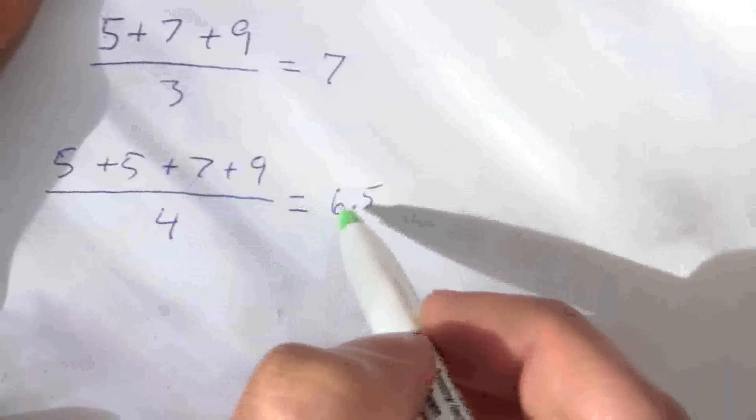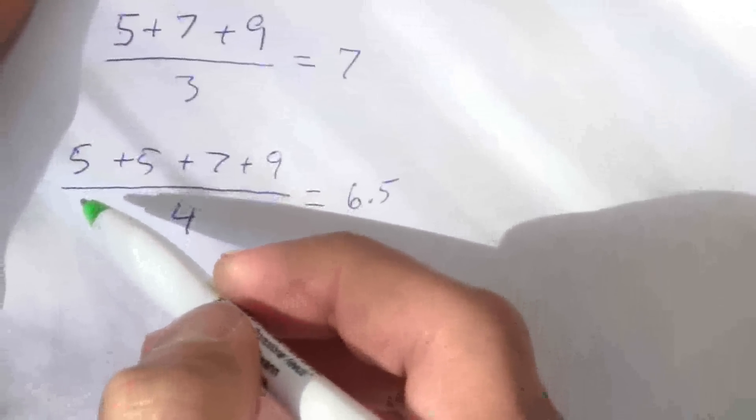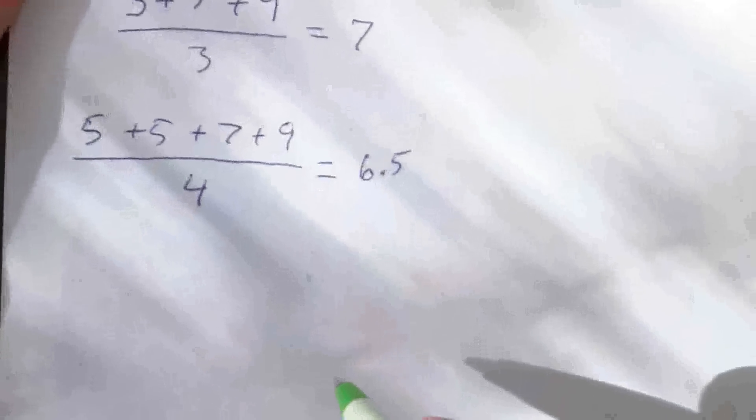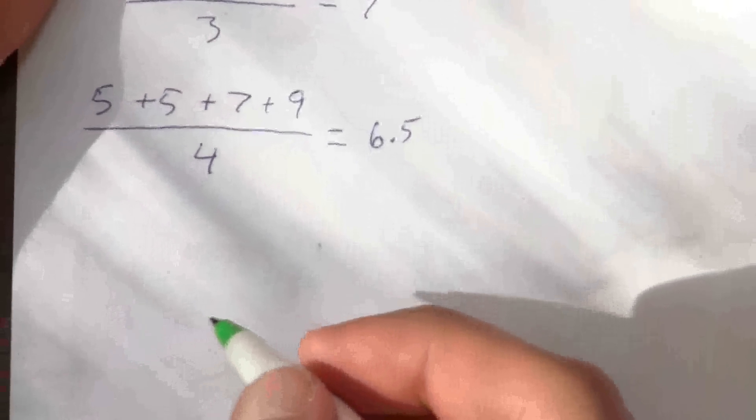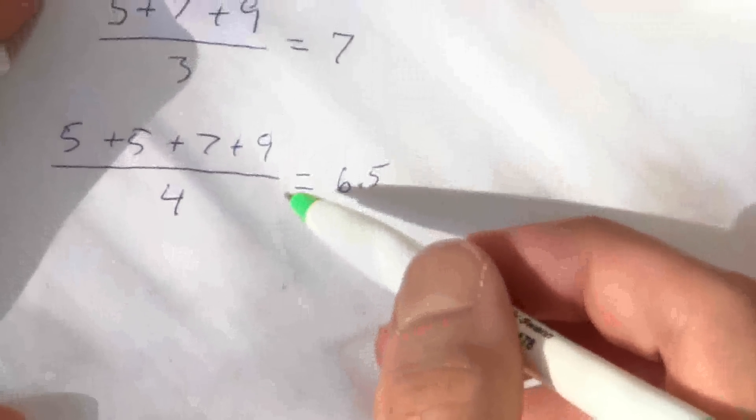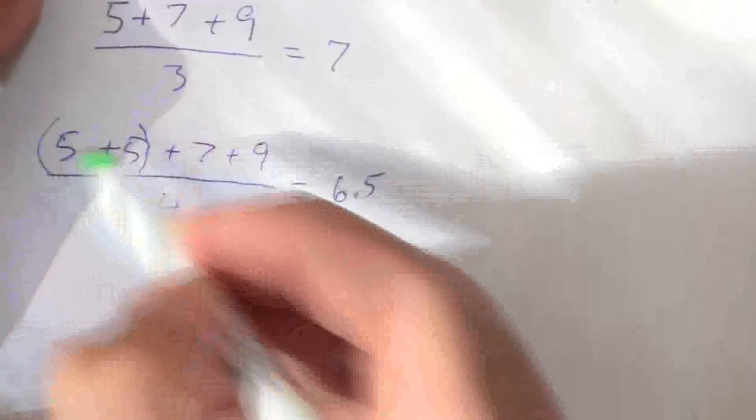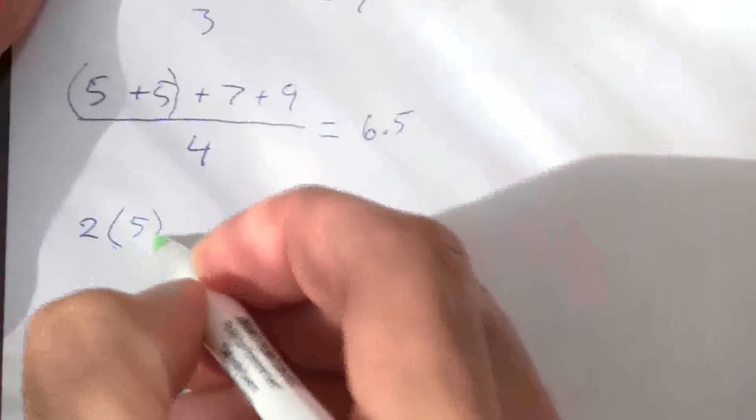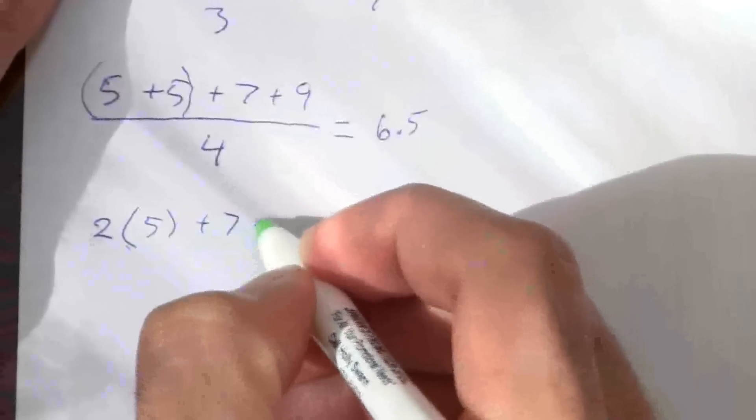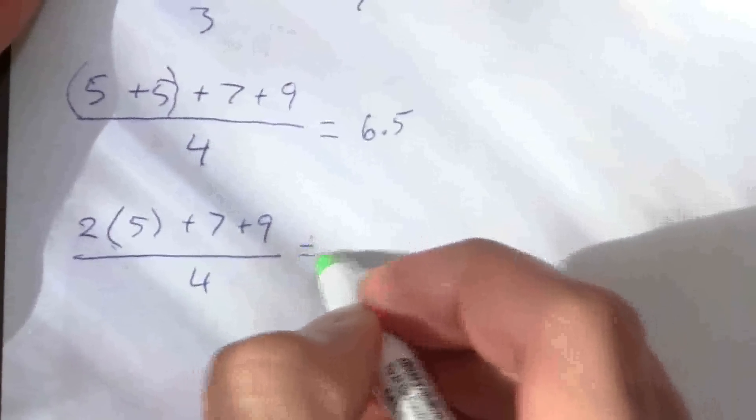So I've weighted it, I've weighted the average a little bit more toward the 5 end. Essentially when I'm adding those two fives I can write this in another way. I can say that's the same thing as saying 2 times 5 plus 7 plus 9 divided by 4.